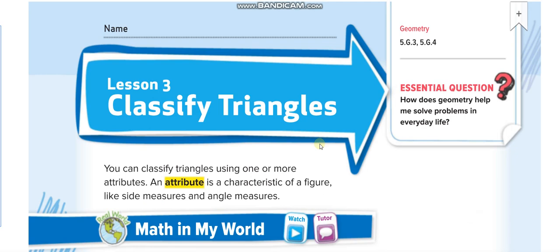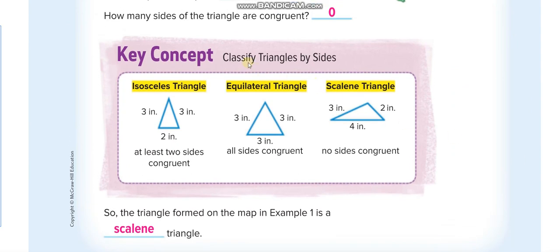You can classify triangles using one or more attributes. An attribute is a characteristic of a figure, like side measure and angle measure. We will classify triangles in two ways today: the first is classifying triangles by their sides, and the second is classifying triangles by their angles — the angles formed when the lines join together.